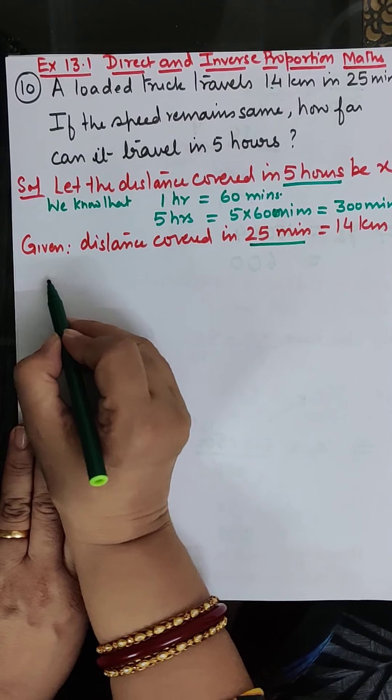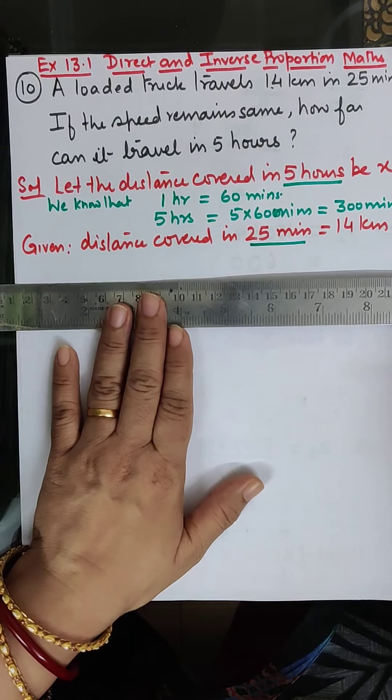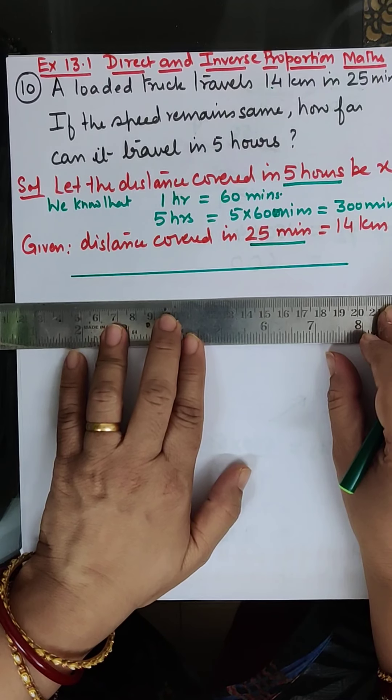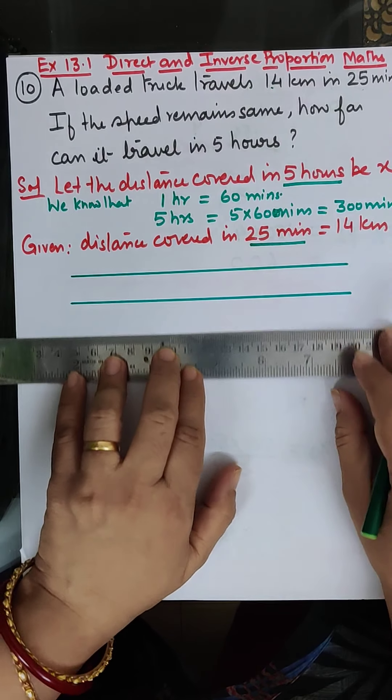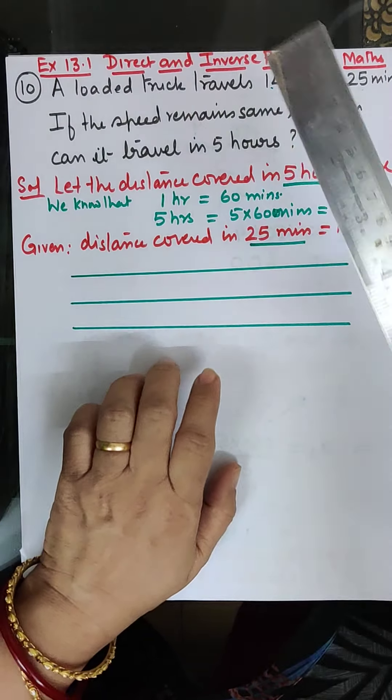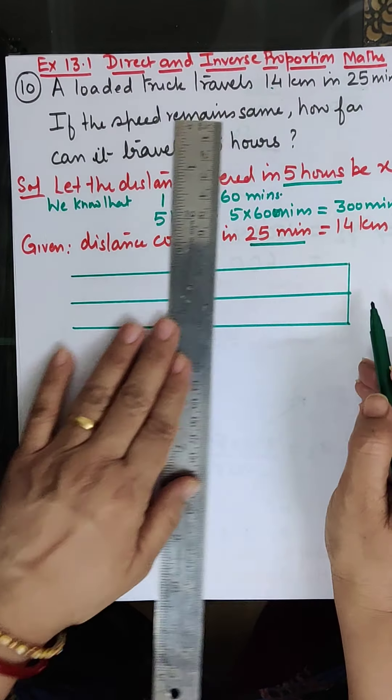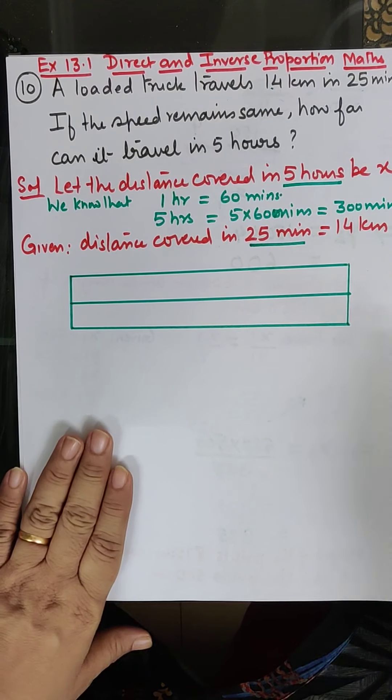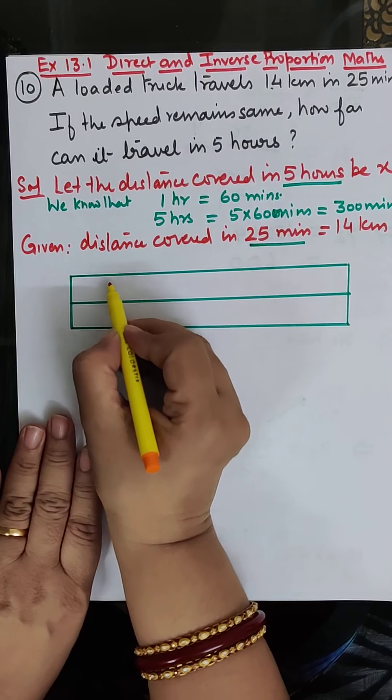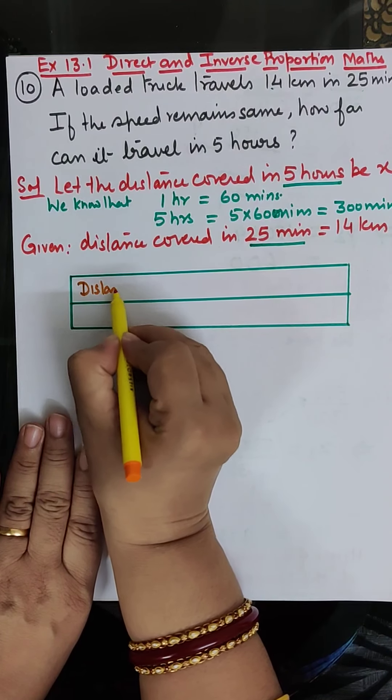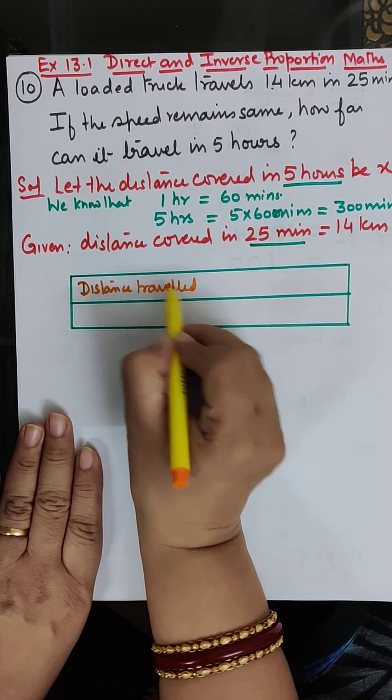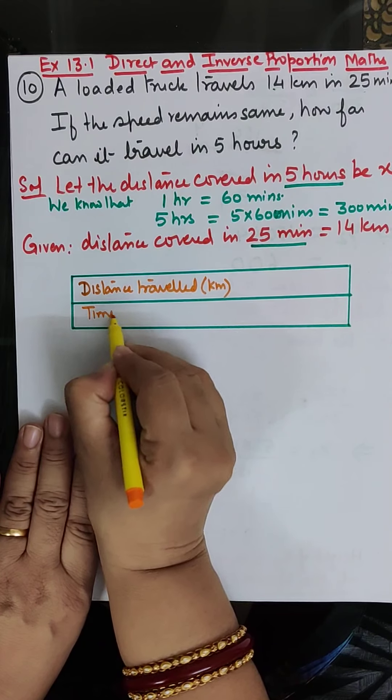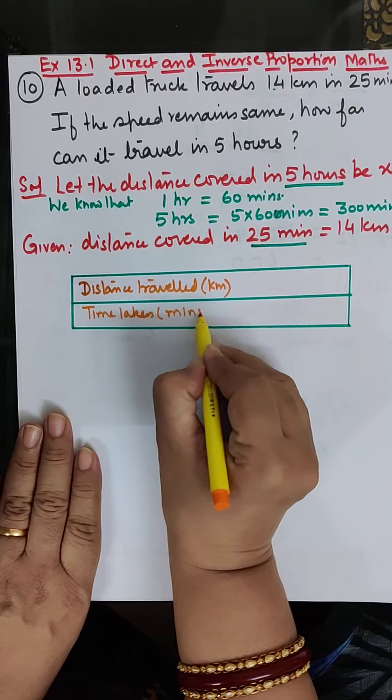Now, let's make the table. Distance traveled in kilometers and time taken in minutes.